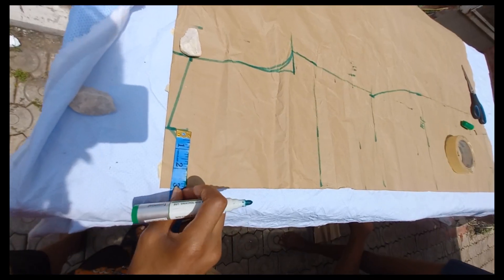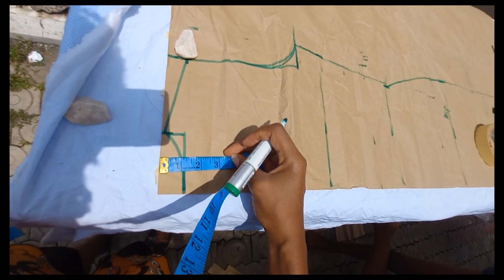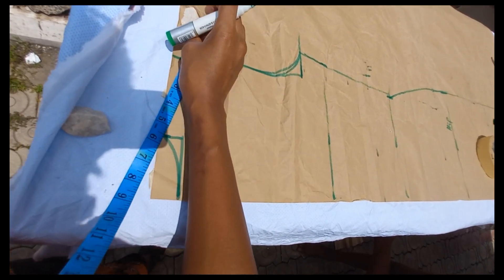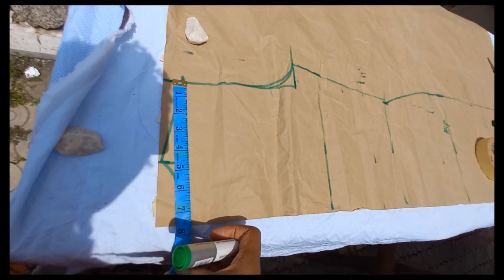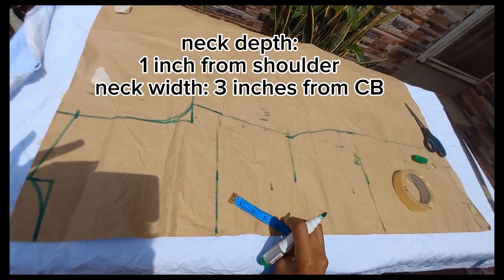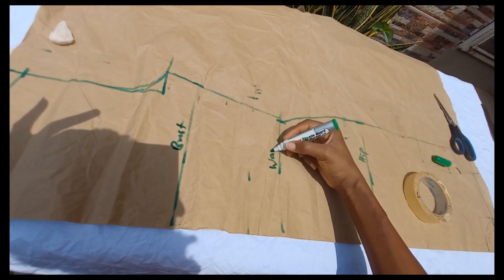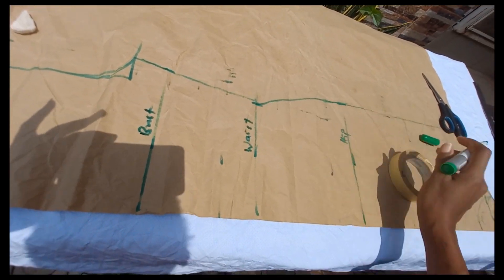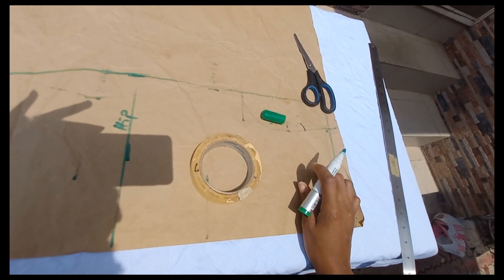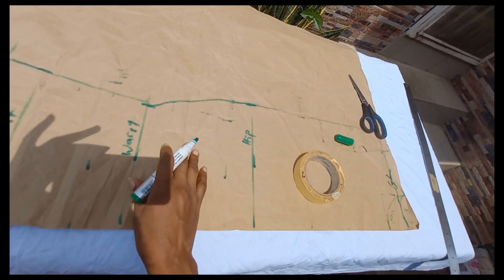So now we're going to the back block. On our back block, we are using the standard back neckline measurement, which is one inch. Our shoulder line, we've done that. We'll be indicating the points: the bust point, the waist point, the hip line, and our gown length, which is the same thing as the front pattern.